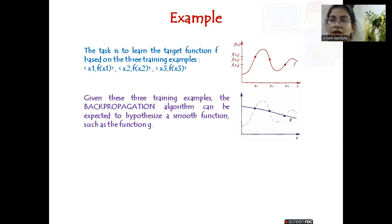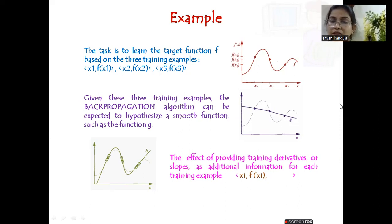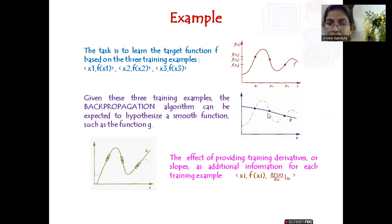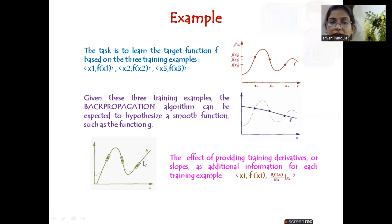Similarly, when you add the training derivatives or slopes as additional information, you will get a different function. Here you can see g shown in a light dotted format — that is what you obtain with only training examples, similar to back propagation. But along with that, when we supply the derivatives — represented here as solid boxes — because of that you get a function h.